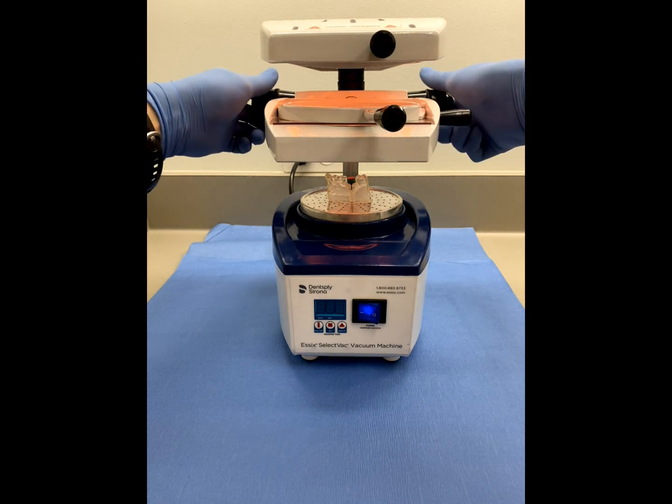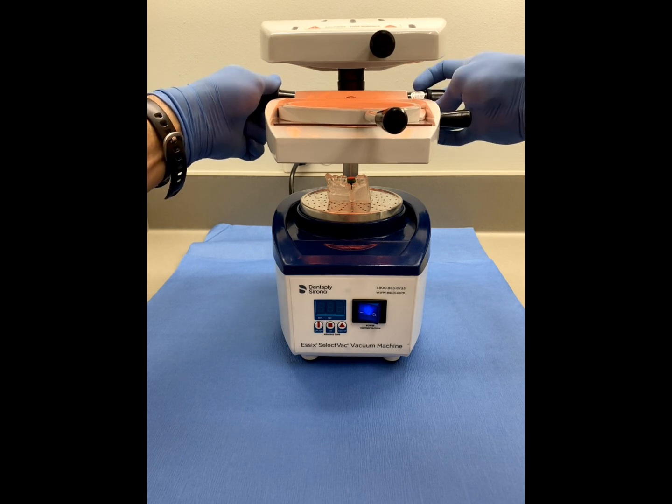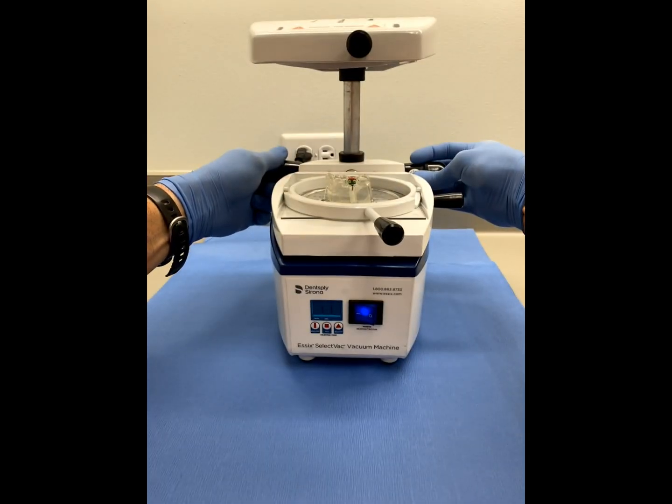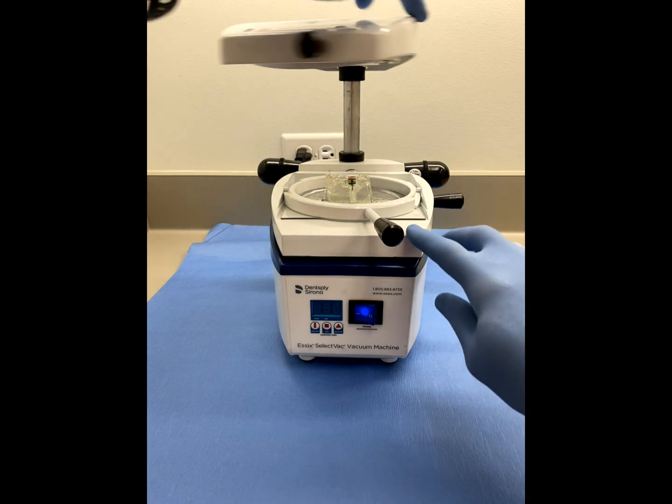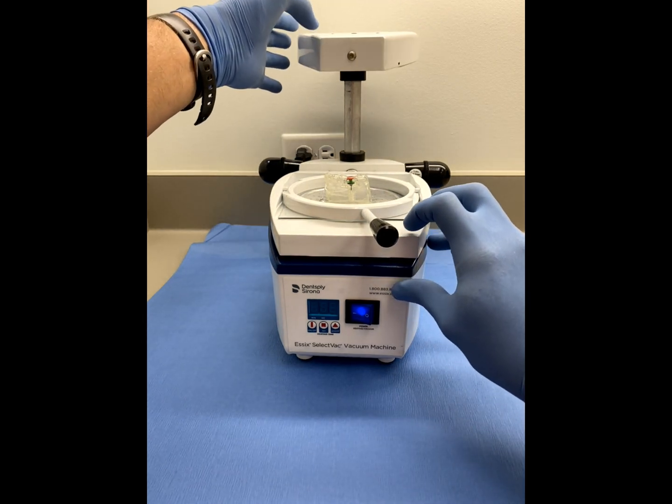Activate either the vacuum or pressure forming feature of the unit and the subsequent forming process will unite the now moldable plastic with the GRS surgical components.